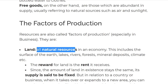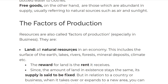So let's start with land. Basically, all natural resources in the economy — which includes the surface of the earth, lakes, forests, mineral deposits, climate, etc. — are natural resources. So the land we have contains natural resources, and land is a factor of production because that is where you obtain those natural resources. Land is basically the natural resources found on or beneath the earth's surface.